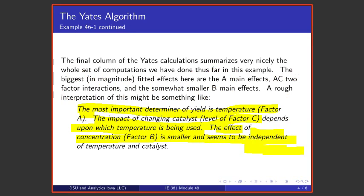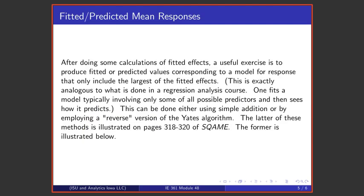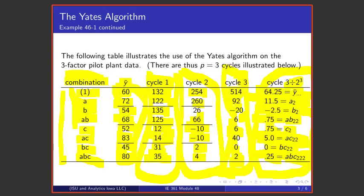So, the interpretation that I make of that is that in terms of a system here that has three factors, what factors A and C do is more or less linked by this two-factor interaction. But what factor B does, changing concentration, doesn't depend upon what levels of A and C that I'm talking about. It's useful after computing these fitted effects to think about what would be produced for output from this system if I ignored all of the small effects.